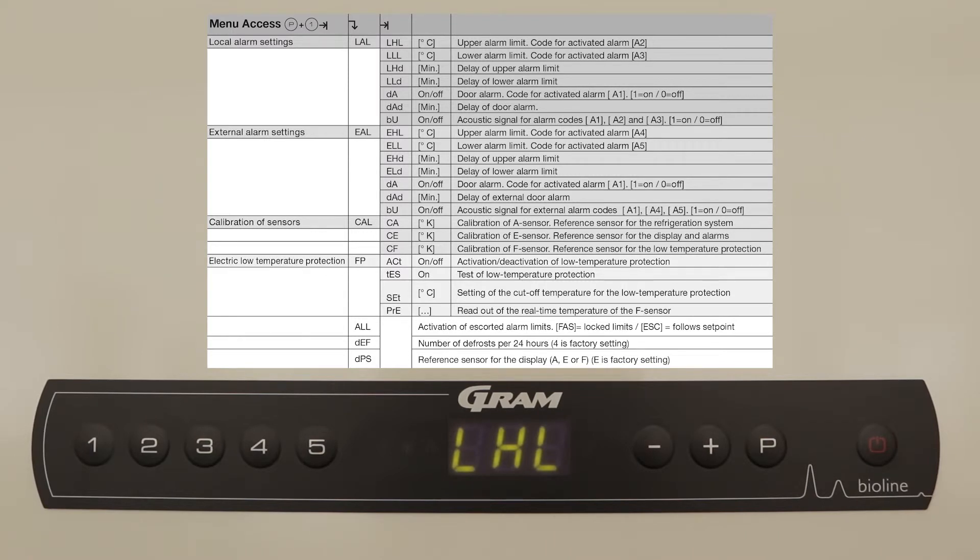You are now presented with the following list of local alarm settings: the upper alarm limit, lower alarm limit, delay of upper alarm limit, delay of lower alarm limit, door alarm, delay of door alarm, and acoustic signal. We will begin with the upper alarm limit.